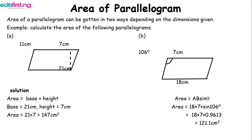For the second case, an angle is given instead. The angle is 106°, and the formula is A = ab·sin θ. Here a is 8 cm, b is 7 cm, and the base is 18 cm. Sin 106° equals 0.9613. Multiplying 18 by 7 by 0.9613 gives 121.1 cm². Don't forget your square units.